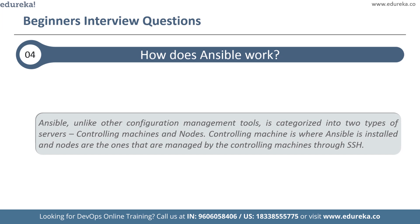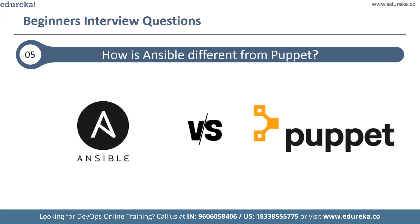The next question is: how does Ansible work? Ansible is categorized into two types of servers: controlling machines and nodes. The controlling machine is where Ansible is installed, and nodes are managed by the controlling machine through SSH. There is an inventory file in the controlling machine that holds the location of the node systems. Ansible deploys modules on node systems by running playbooks on the controlling machine. Since Ansible is agentless, there is no need for a third-party tool to connect nodes.